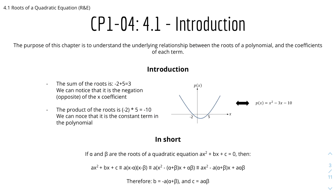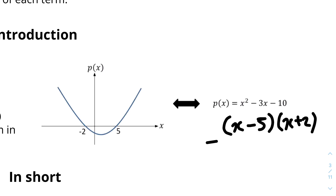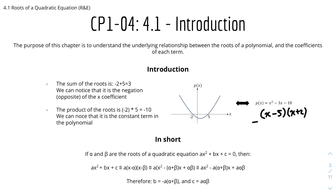Here we have a graph of p(x). Let's say p(x) is equal to x squared minus 3x minus 10. This can be factorized into (x minus 5)(x plus 2), and the roots are at 5 and minus 2. The sum of the roots is minus 2 plus 5, which is 3. We can notice that it is the negation of the x-coefficient — the coefficient is minus 3.